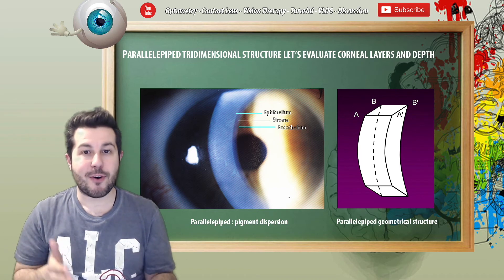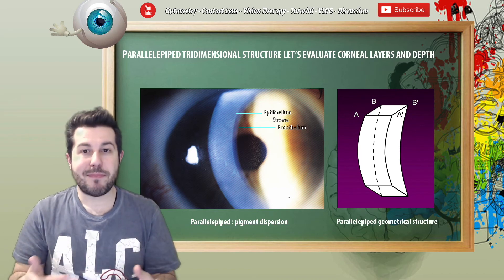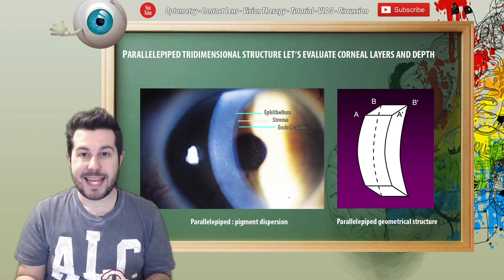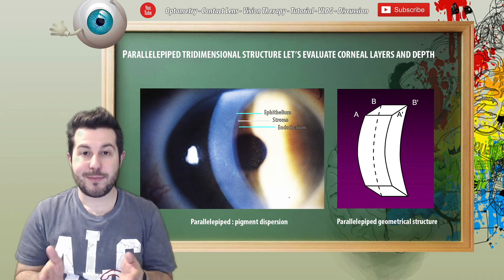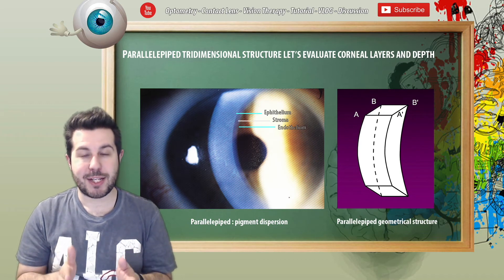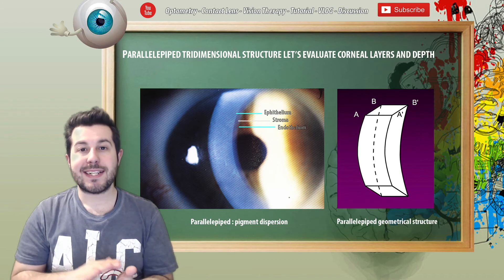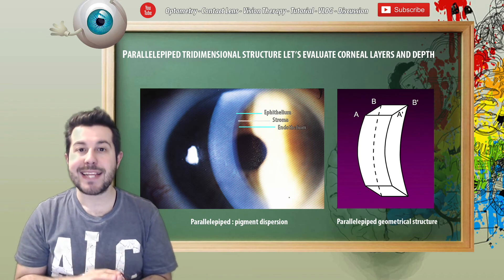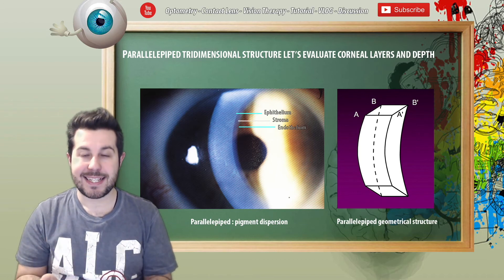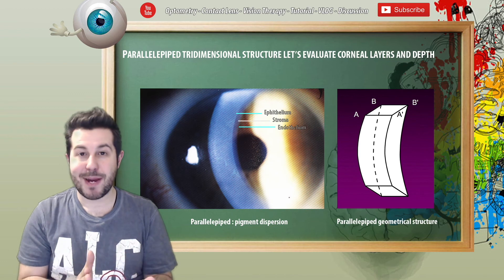For example, we can check for Vogt's striae. Then we can pass to lens evaluation by reducing the angle between the illumination and observation system, allowing us to evaluate the regularity of lens surfaces and their transparency.